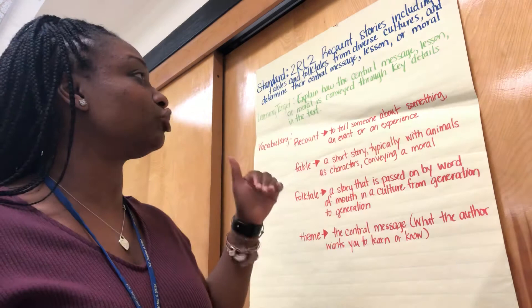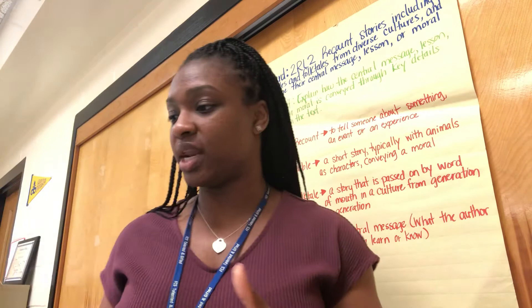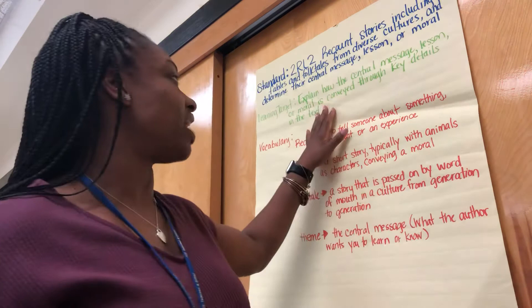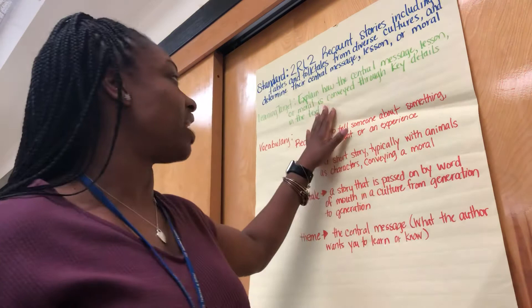And that is the end. Going back to our learning target — explain how the central message, lesson, or moral is conveyed through key details in the text. After reading The Boy Who Cried Wolf, what is the central message, lesson, or moral conveyed through that text? I want you to recount this story in writing, and then identify the central message, lesson, or moral. If you have any questions, contact me at school or email me at RuckerAD at FultonSchools.org. I'll see you guys next week! Bye!